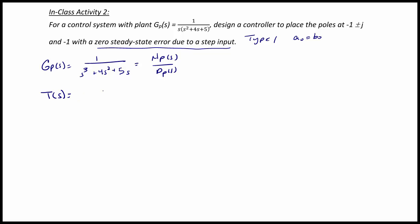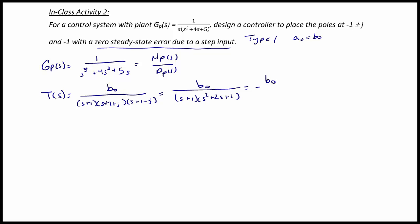Our desired closed loop transfer function has a numerator of b-not and a denominator of (s plus 1)(s plus 1 plus j)(s plus 1 minus j). When we multiply together the polynomials we get (s plus 1)(s squared plus 2s plus 2), which equals b-not over (s cubed plus 3s squared plus 4s plus 2). Since b-not must equal a-not, we have 2 over (s cubed plus 3s squared plus 4s plus 2), and this equals NT(s) over DT(s).